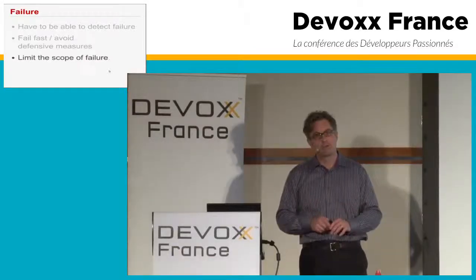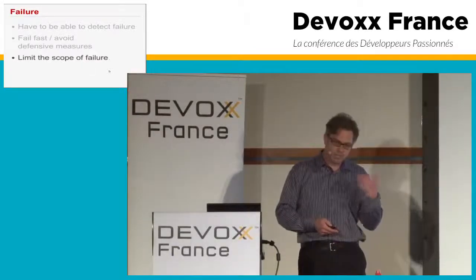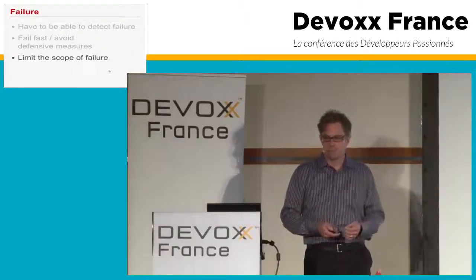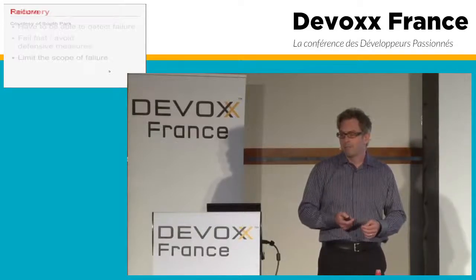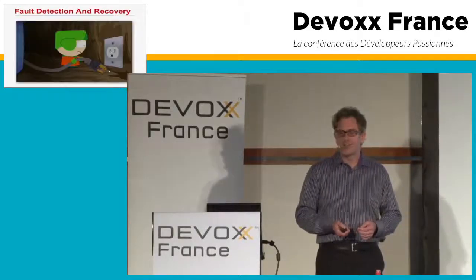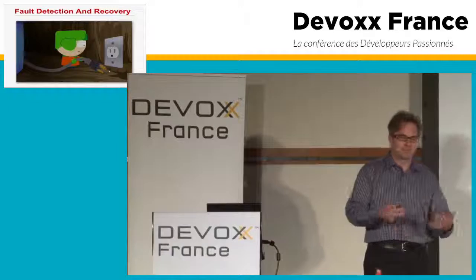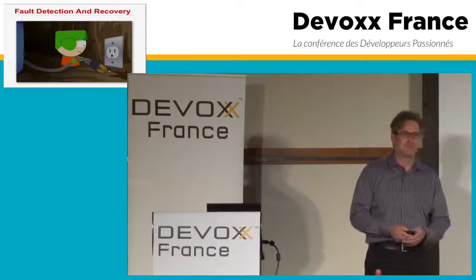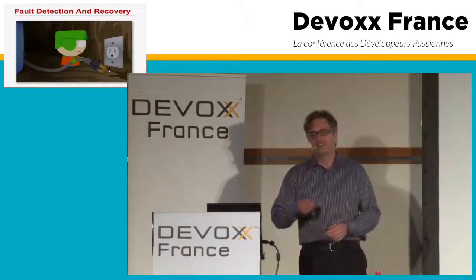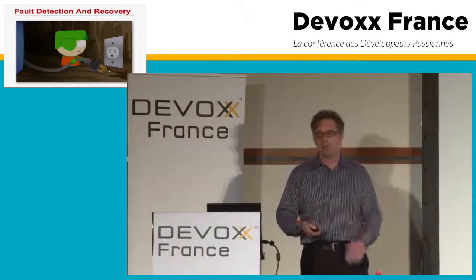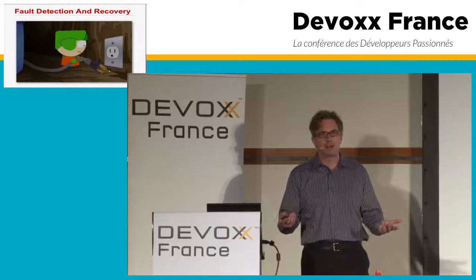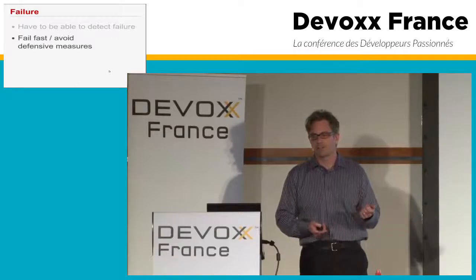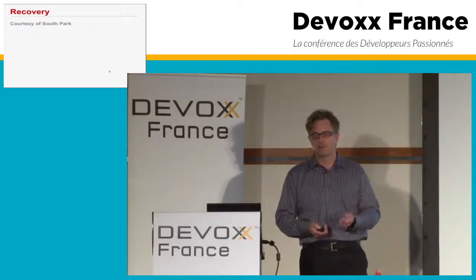Avoiding defensive measures - assertions are part of that, and you can use them in any language. Limiting the scope of failures is the isolation principle. This is recovery. This is from a South Park episode where the internet goes down. At the end, Stan goes and pulls out this huge router and plugs it back in, and fixes it. This is the three-step process to recovering anything: you unplug it, wait five seconds, and plug it back in. And what happens? It works.